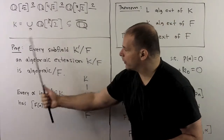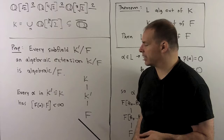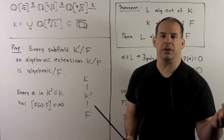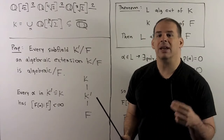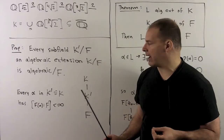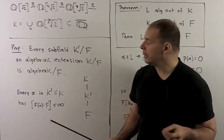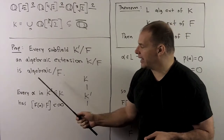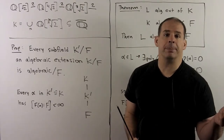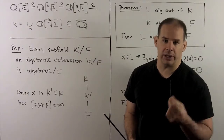Now, a useful fact: if we have k an algebraic extension of f, and k prime is a subfield of k that contains f, then k prime is also an algebraic extension of f. This is straightforward — if we take any alpha in k prime, it's already an element of k, so alpha is algebraic over f, which is what we need to show.